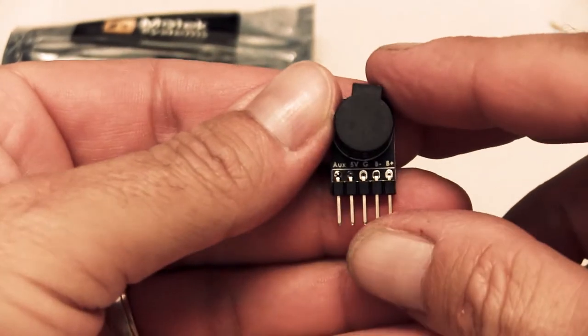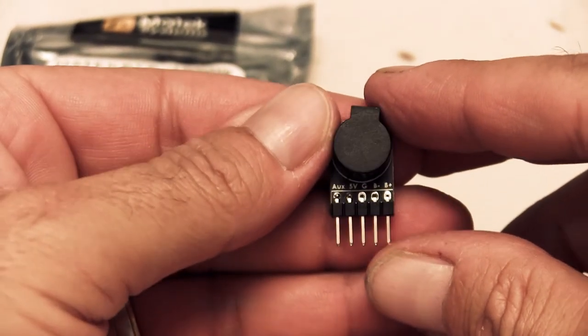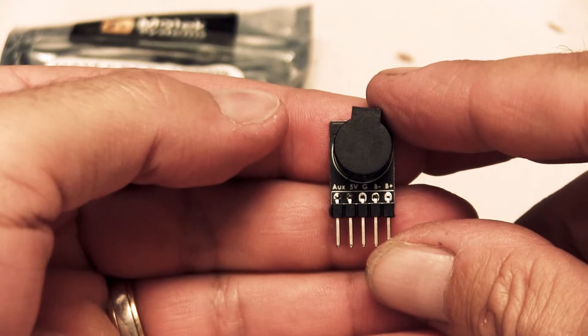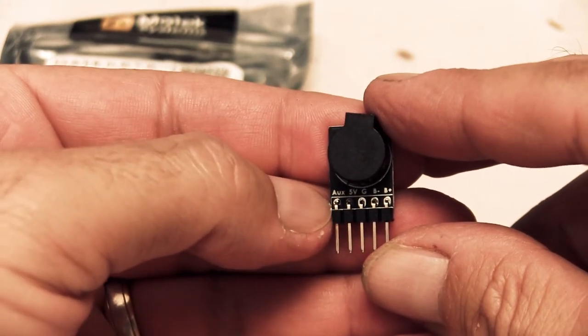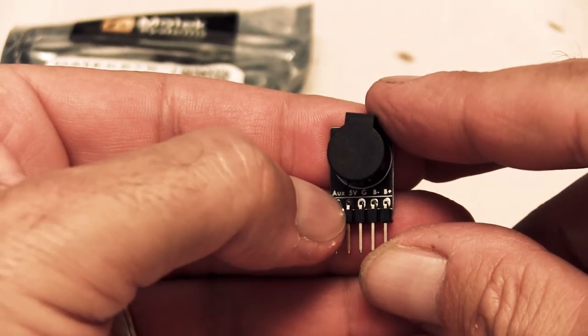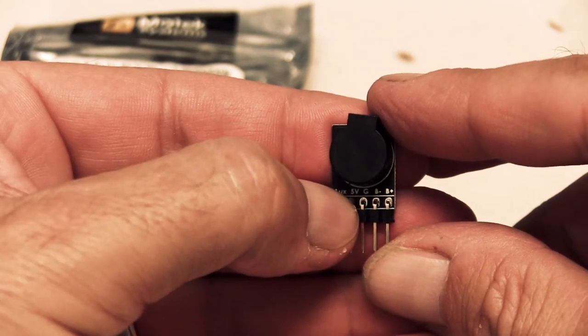Alright so we've got an auxiliary channel on the left. We've got a 5 volt second pin in. Ground is in the middle. And the last two, I can't quite read it from here. It looks like a B plus and a B minus.